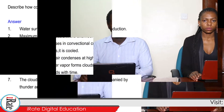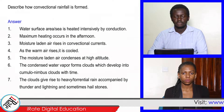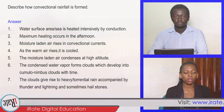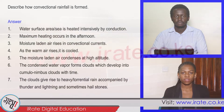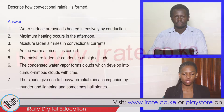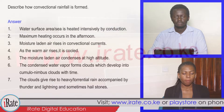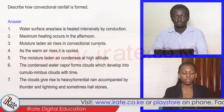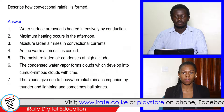Describe how conventional rainfall is formed. Water surface area or sea is heated intensively by conduction. Maximum heating occurs in the afternoon.